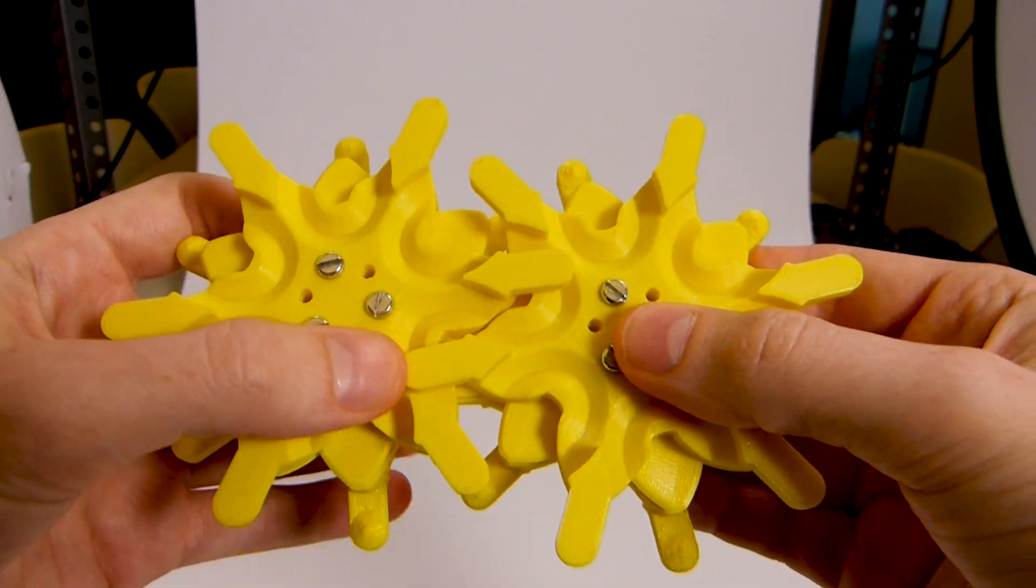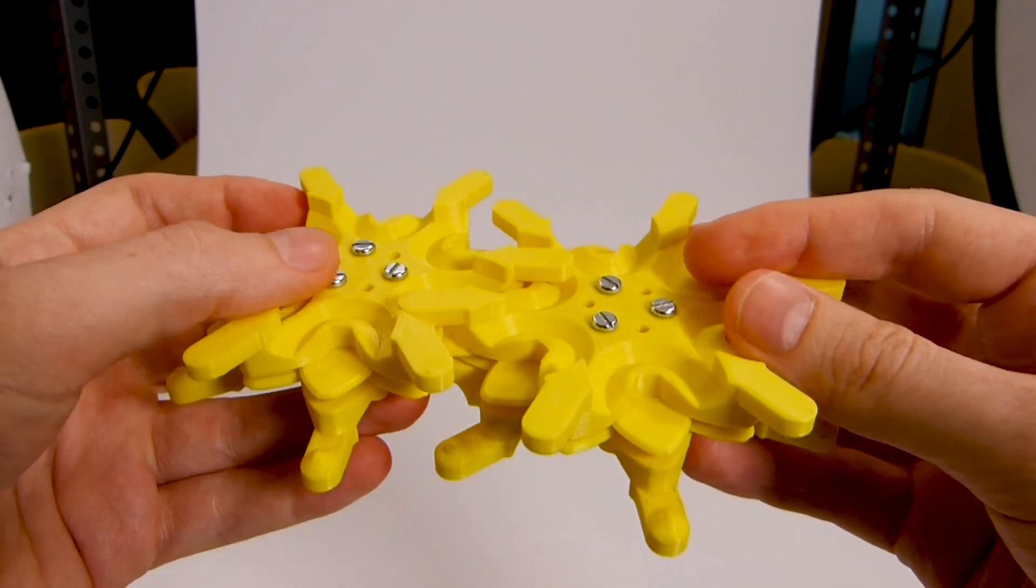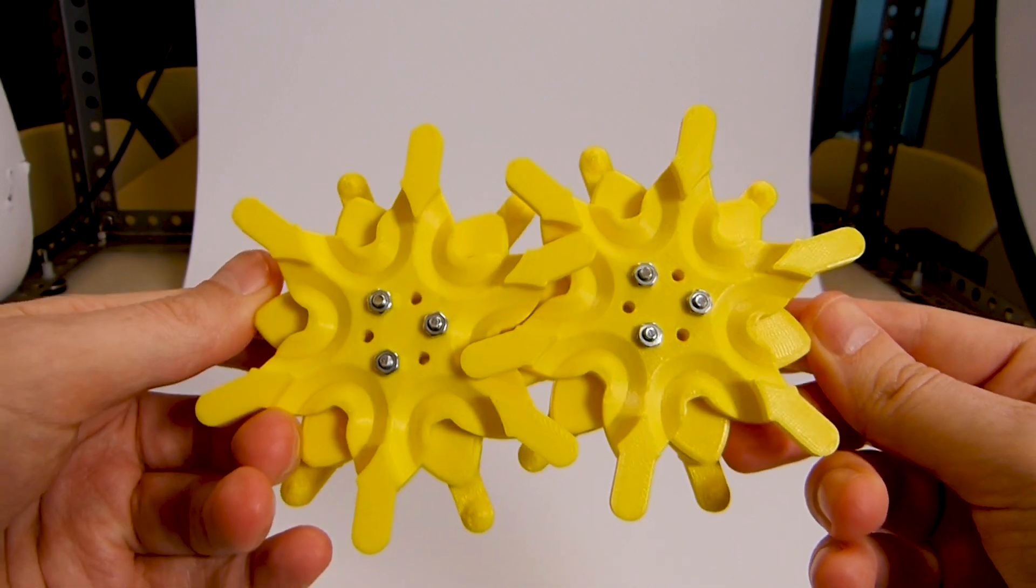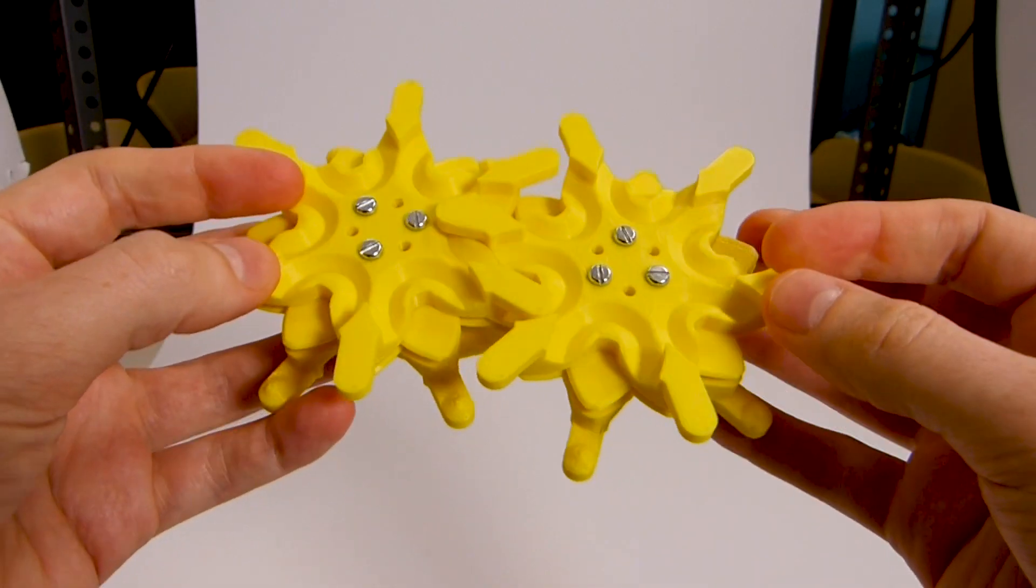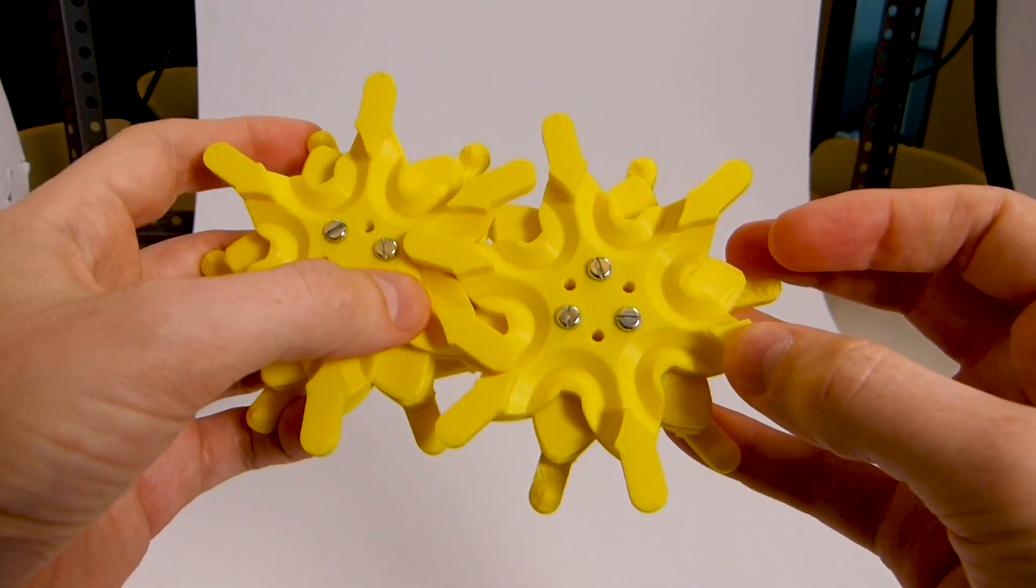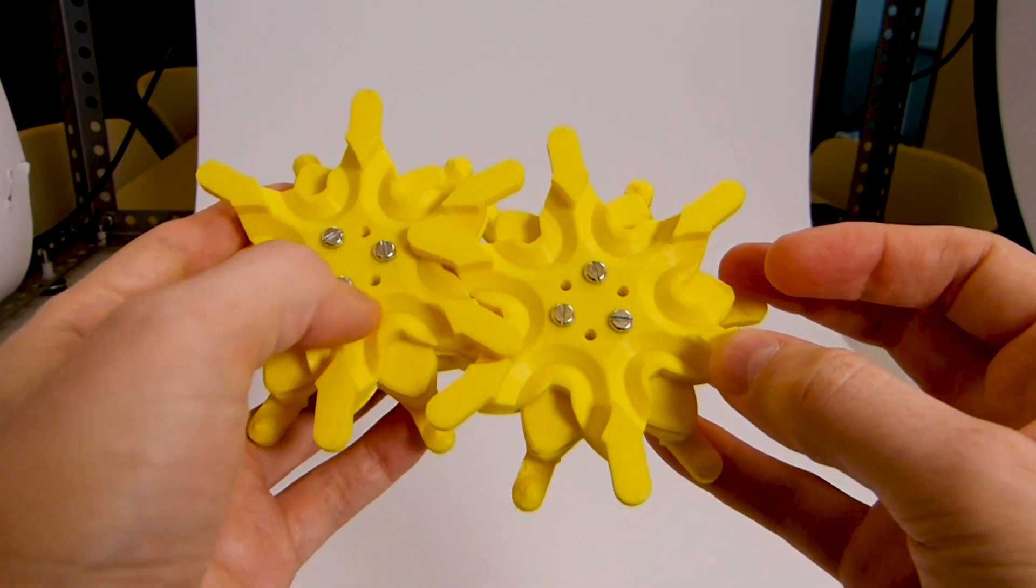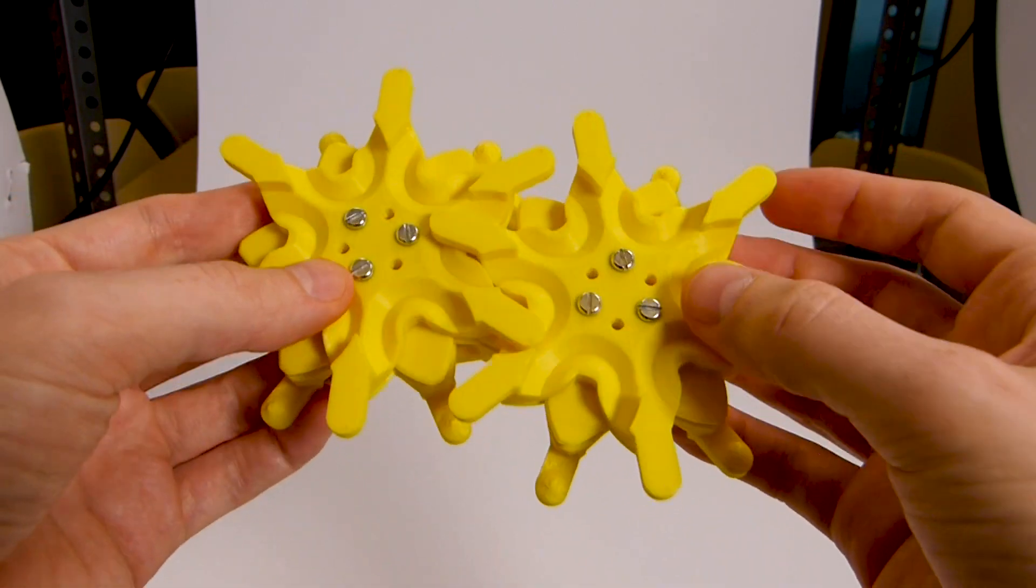In this position there's two cones gripping on the top and another two on the bottom. Then as it rotates, when one cone detaches, there's already another cone, another arm that's grabbing onto it.